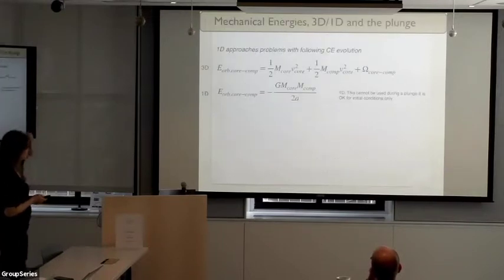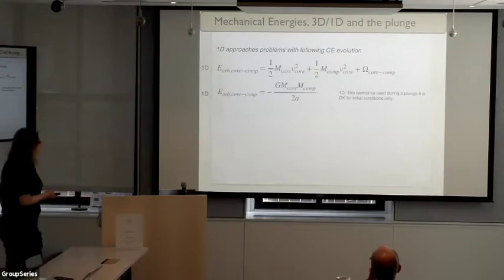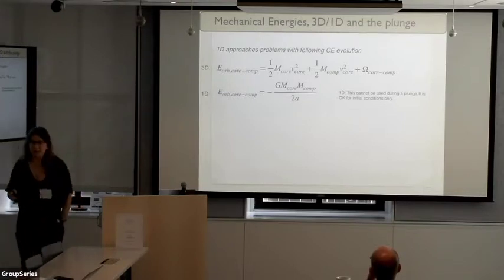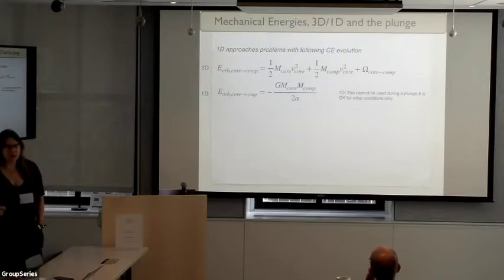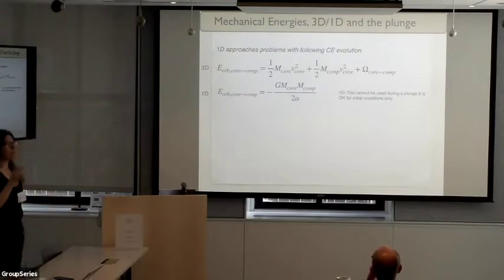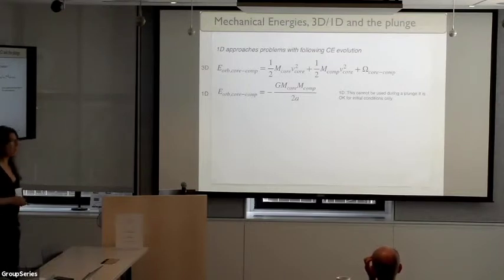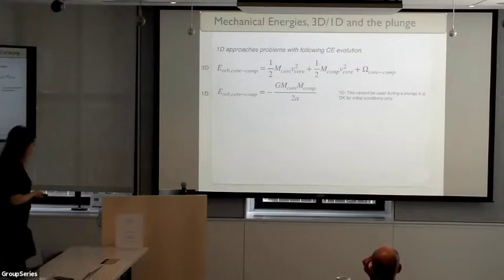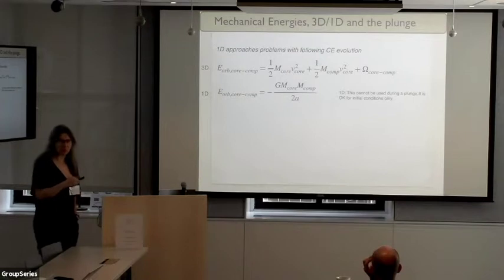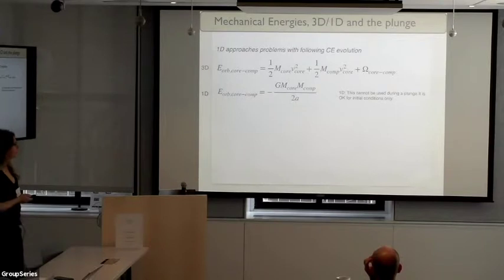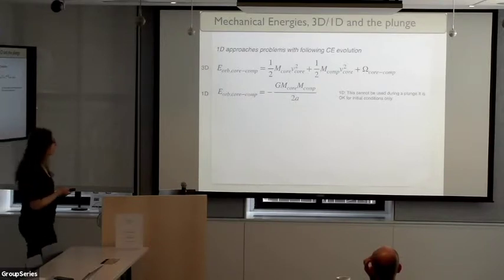The problem with 1D codes is that the plunge-in phase usually takes place on the order of the initial orbital period. The orbital change during that time is non-Keplerian because mass is changing inside the orbit, so you cannot have a Keplerian potential. You cannot do the same approach as was usually done with 1D codes. Somebody has to think about this, but in principle, the plunge-in phase is not really treatable in a 1D code.